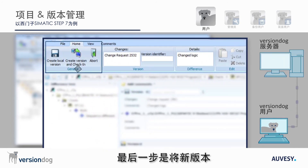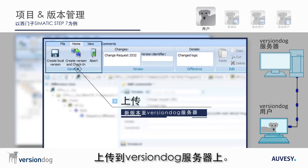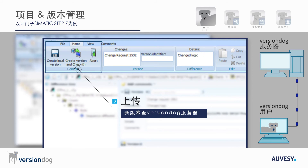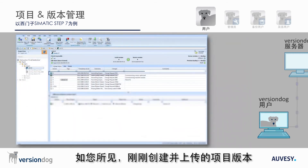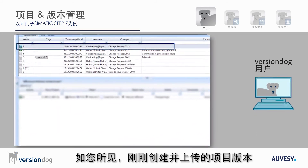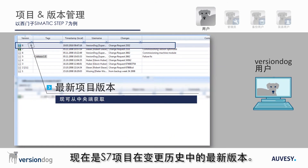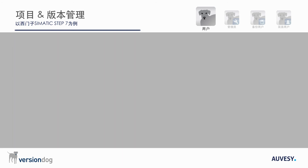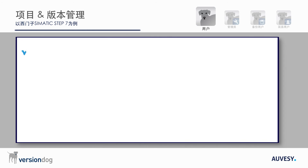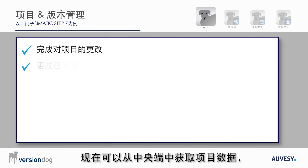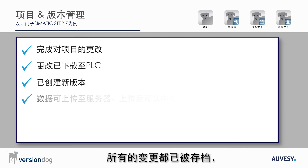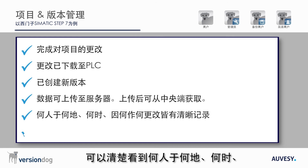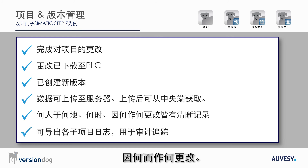The final step is to check in the new version to the VersionDog server. As you can see, the project version that was just created and checked in is now the latest version of the S7 project in the change history. The project data is now available from a central location and all changes have been documented so that it is clear who changed what, where, when and why.